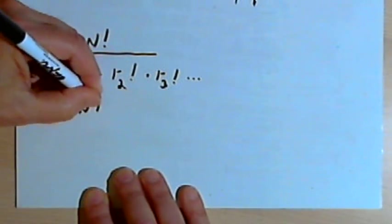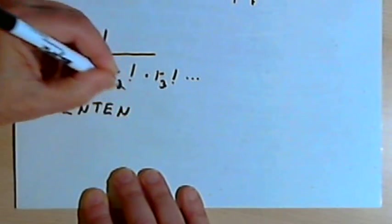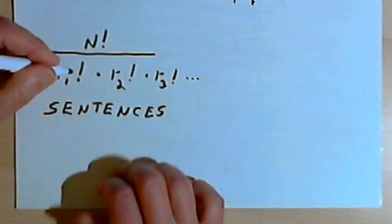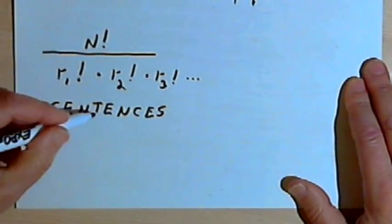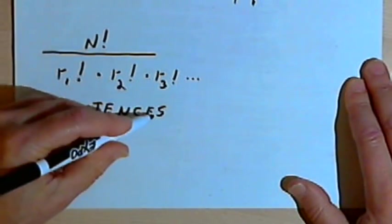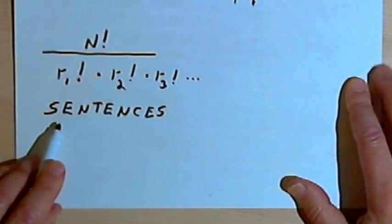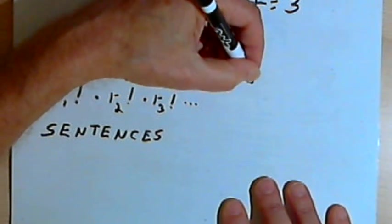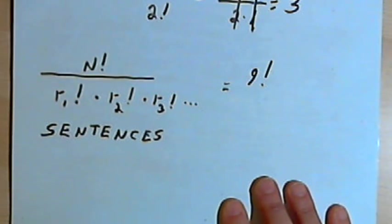So let's take the word sentences, S-E-N-T-E-N-C-E-S. And that's got 1, 2, 3, 4, 5, 6, 7, 8, 9 letters in it all together. So N is going to be 9, therefore N factorial will be 9 factorial. And now let's look at the repeats.